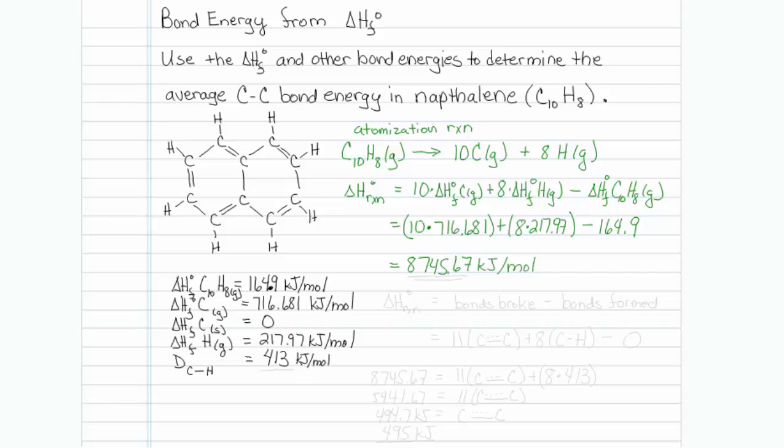Now there's another thing we can do with our atomization reaction. We can also find delta H of this reaction by taking bonds broke minus bonds formed. That's another way to get delta H.